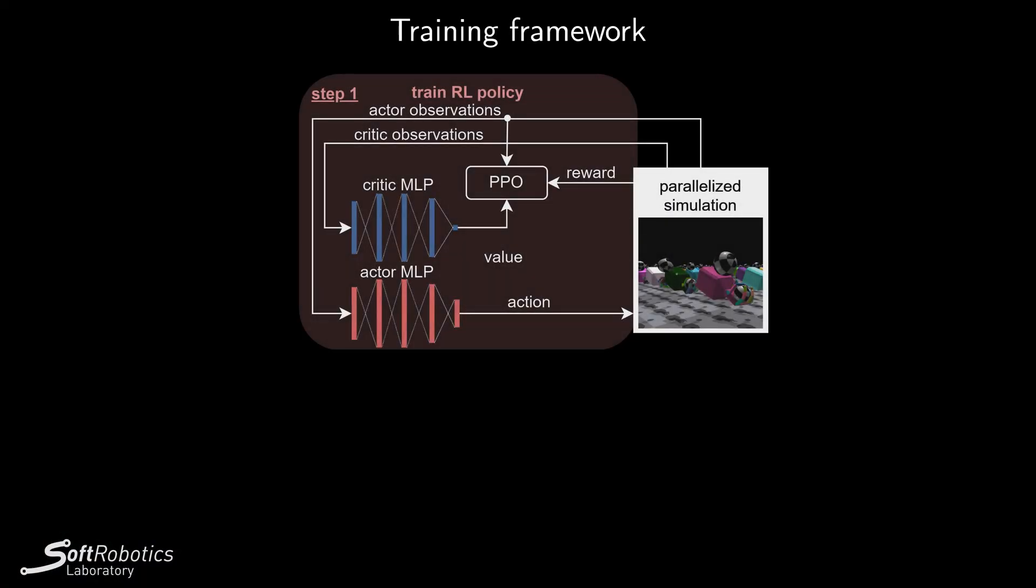We have already shown that we can model the rolling contact joints of these tendons. So, how do we use these models to learn how to control this hand?